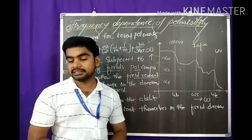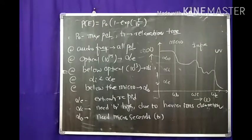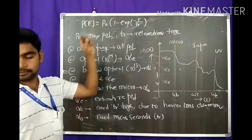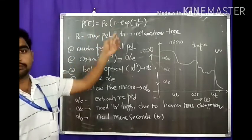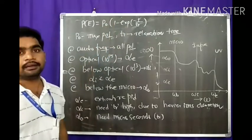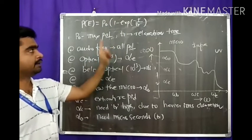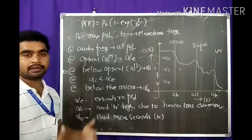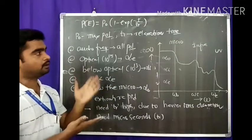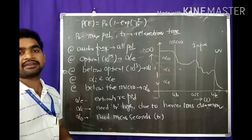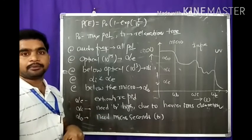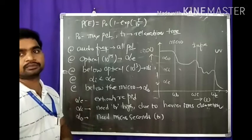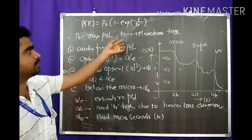In general, the polarization-to-frequency relation is given, where P0 is the maximum polarization in the dielectric material and tau is the relaxation time. Relaxation time means the average time taken for reorientation of the dipoles — that is, how much time is taken for the dipoles to orient in the applied field direction.